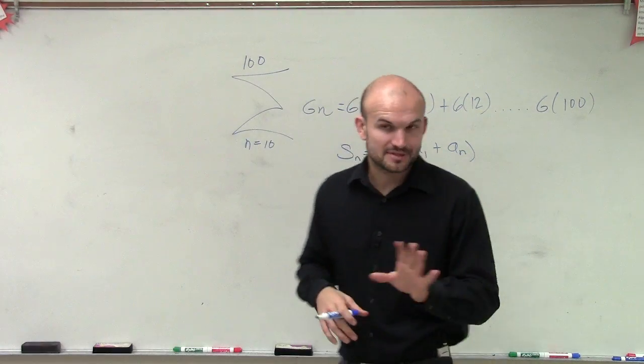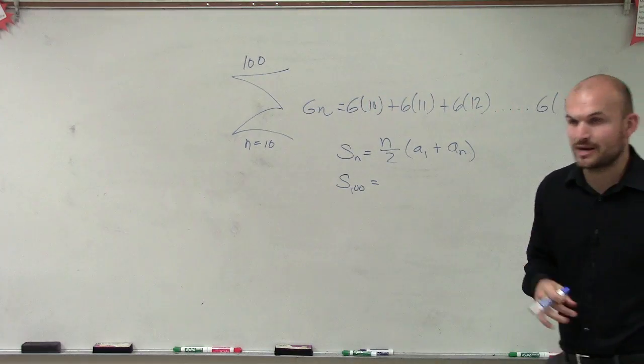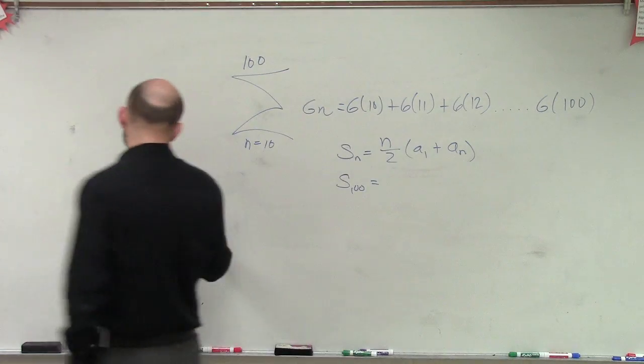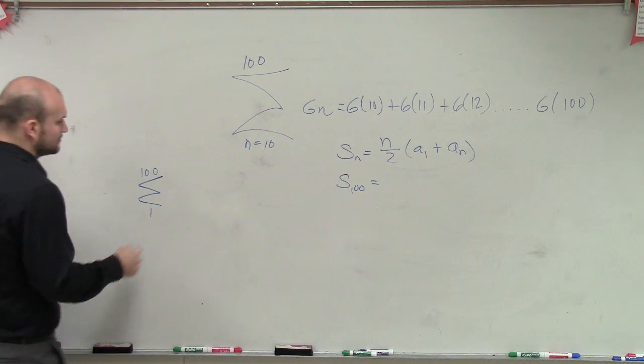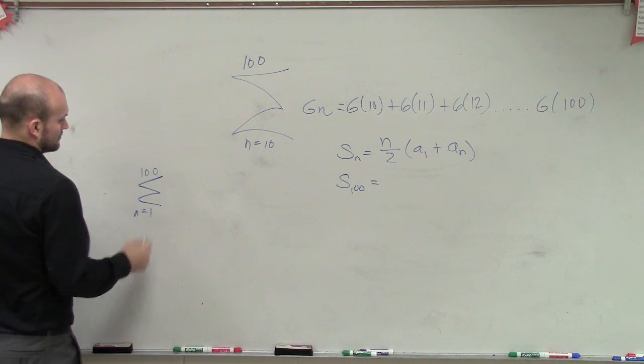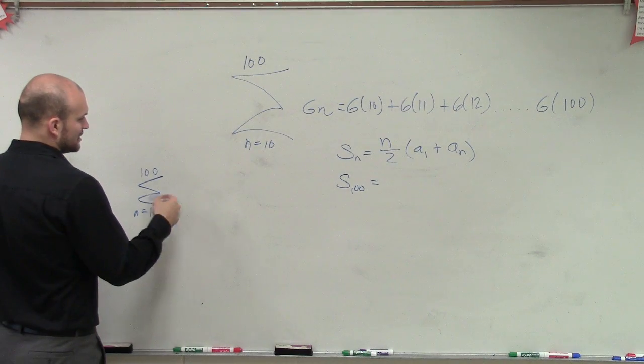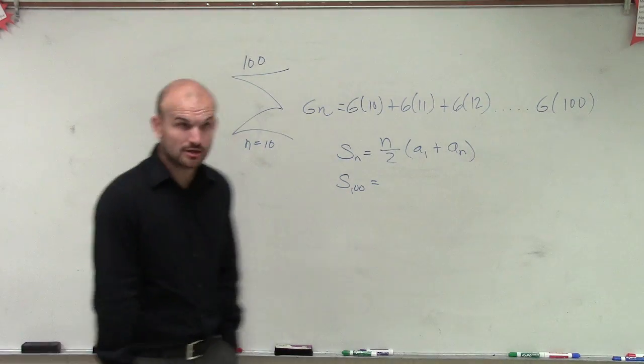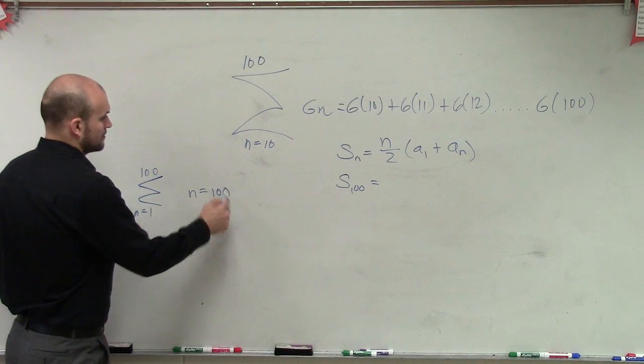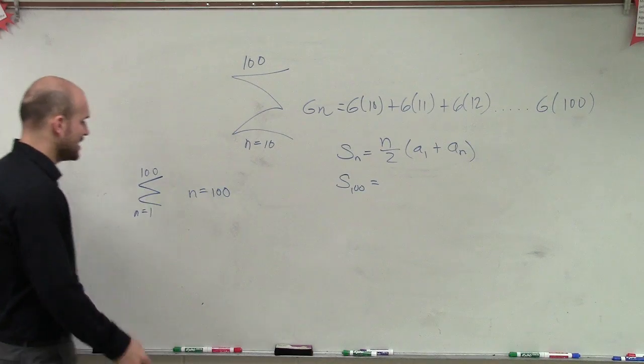Now, this is where it gets a little bit confusing thinking about it, because if I had a summation here of 101, we would say n, the number of terms that we're going to find, n equals what? 100 terms, right?